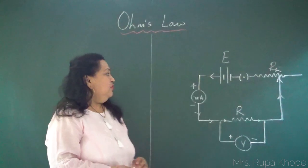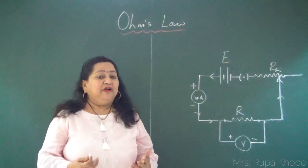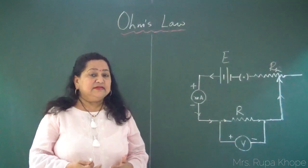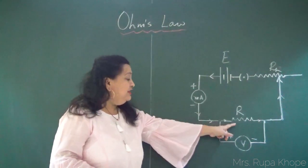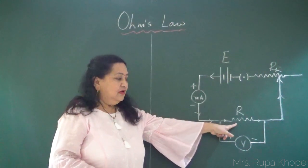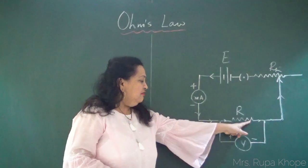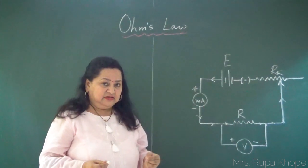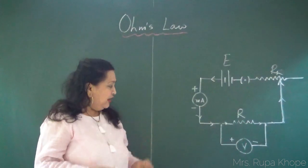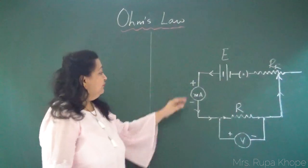We are finding resistance per unit length of this wire. You can see here — this is the wire which is the resistance. We need to find out that resistance using Ohm's law.